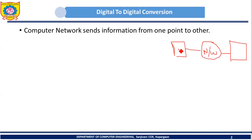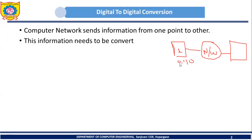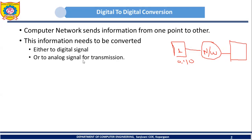Let's assume that this first computer has some data in the form of zeros and ones — suppose 0, 1, 1, 0. We want to transmit that data from computer one to computer two by using this network. This information which is to be transmitted needs to be converted either to a digital signal or to an analog signal for transmission.